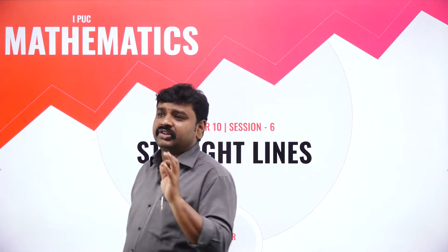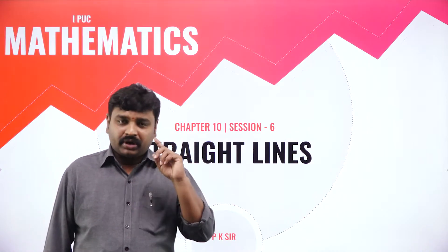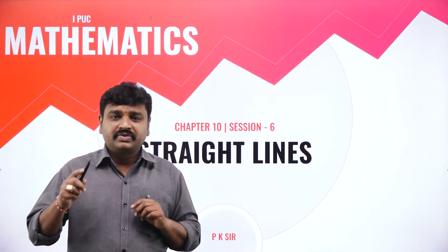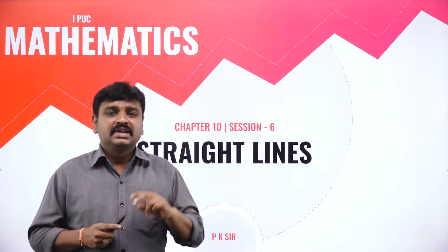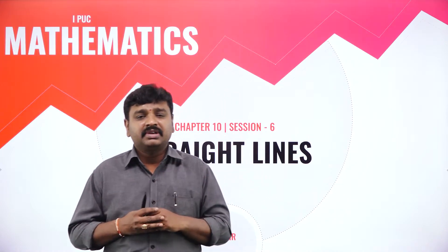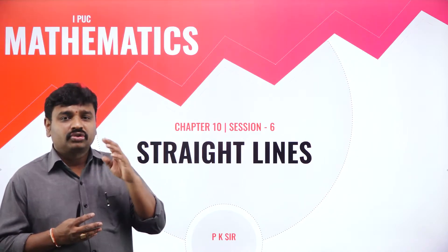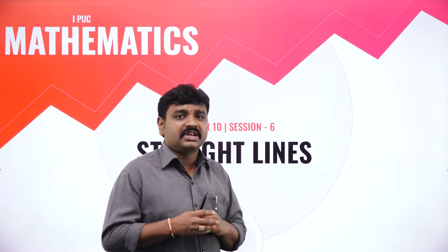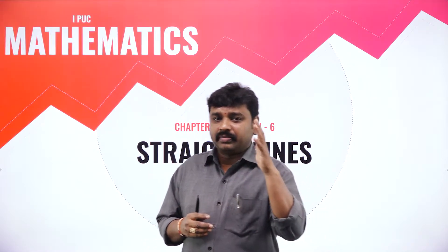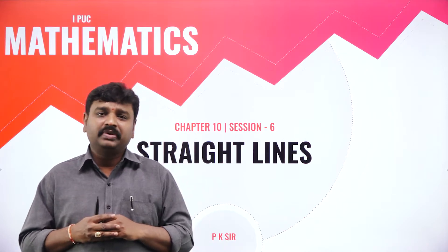What are the different forms of straight lines? The first form is point slope form: y minus y1 equals m into x minus x1. Second form, slope intercept form: y equals mx plus c. Third form, two point form: (y minus y1)/(y2 minus y1) equals (x minus x1)/(x2 minus x1). Fourth form, intercepts form: x by a plus y by b equal to 1. And fifth form, normal form: x cos omega plus y sin omega equals p.